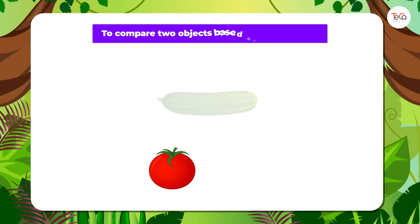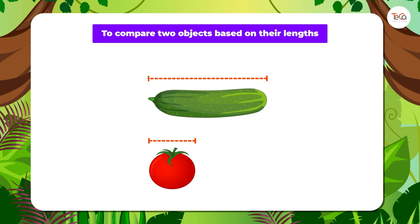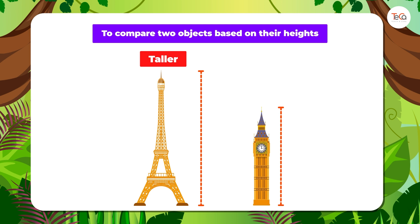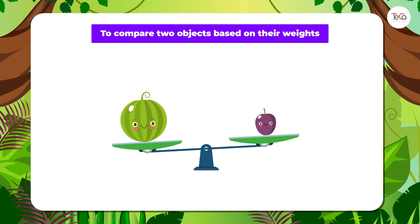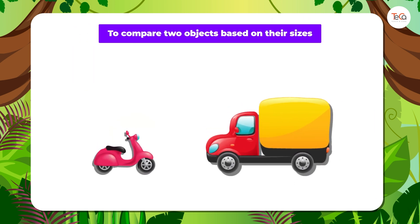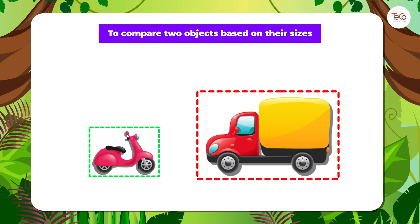To compare two objects based on their lengths, we say longer or shorter. To compare two objects based on their heights, we say taller or shorter. To compare two objects based on their weights, we say heavier or lighter. To compare two objects based on their sizes, we say bigger or smaller.